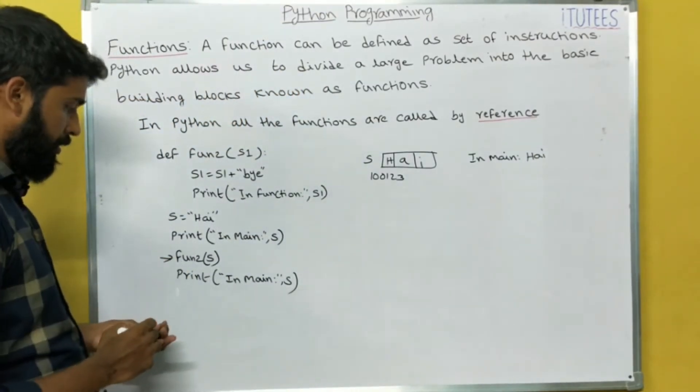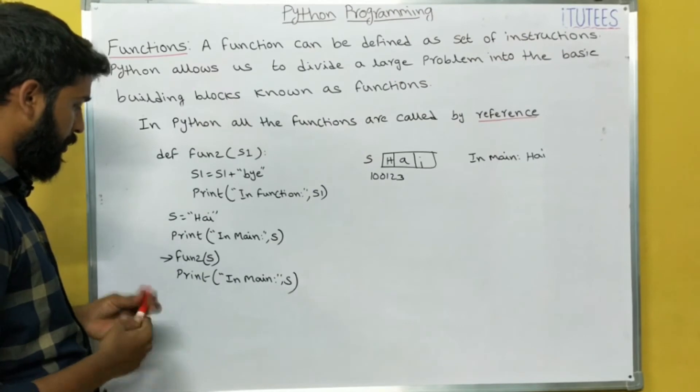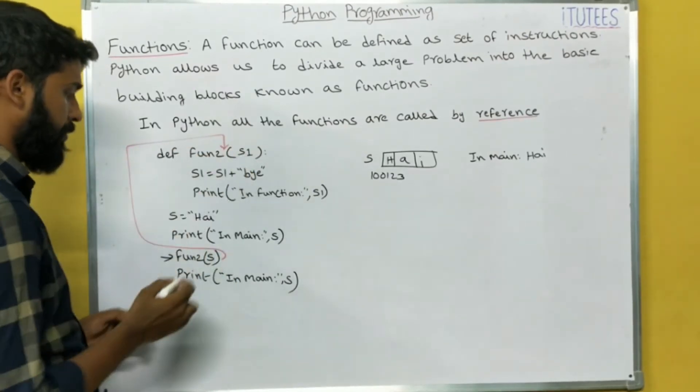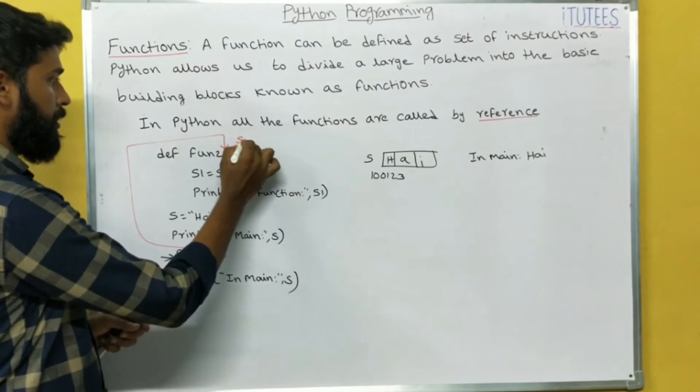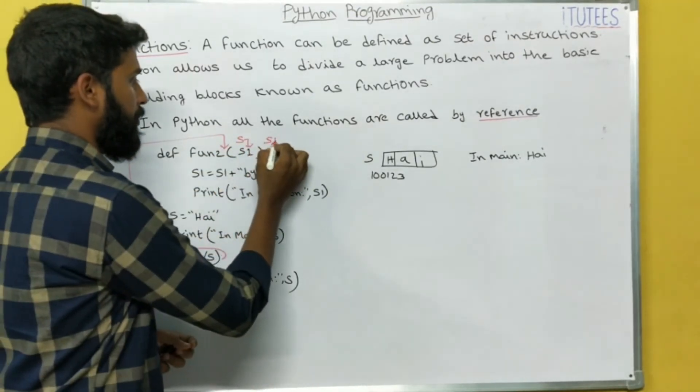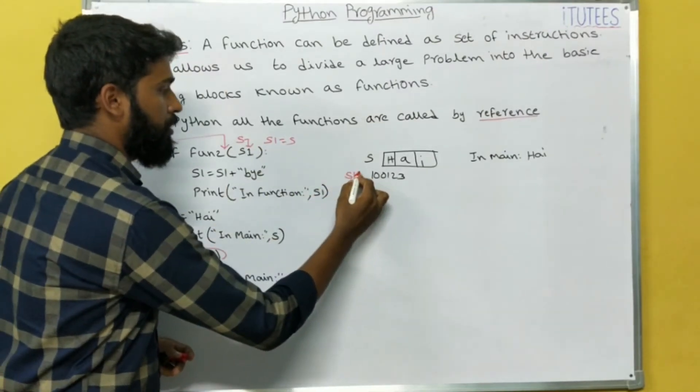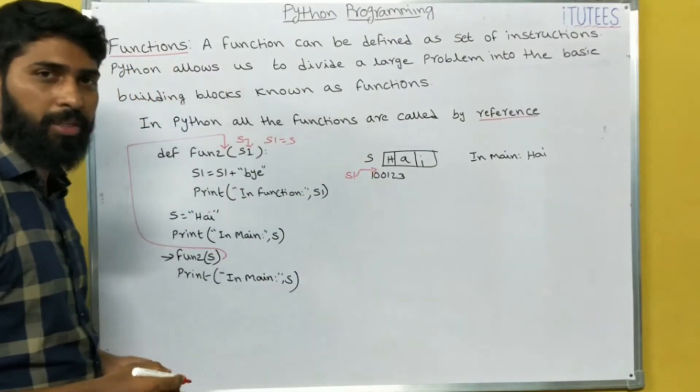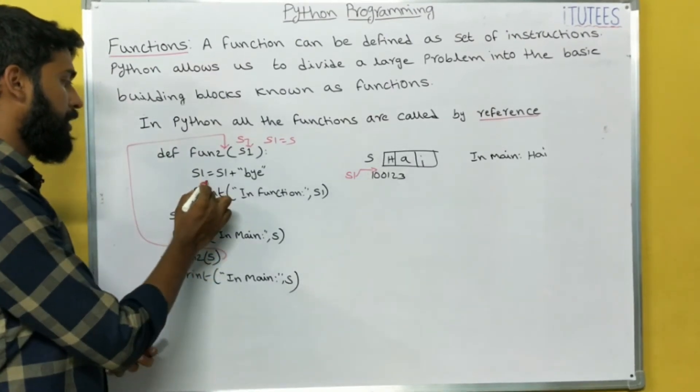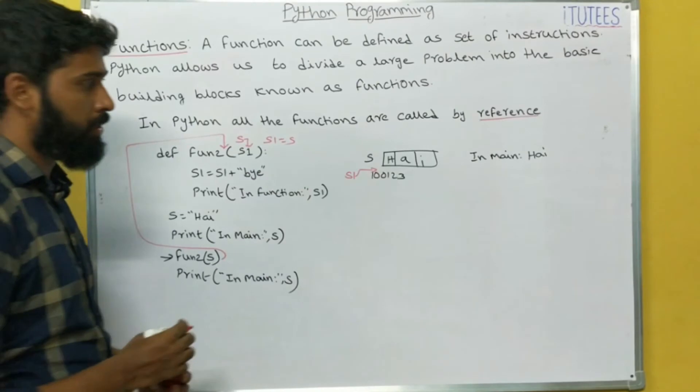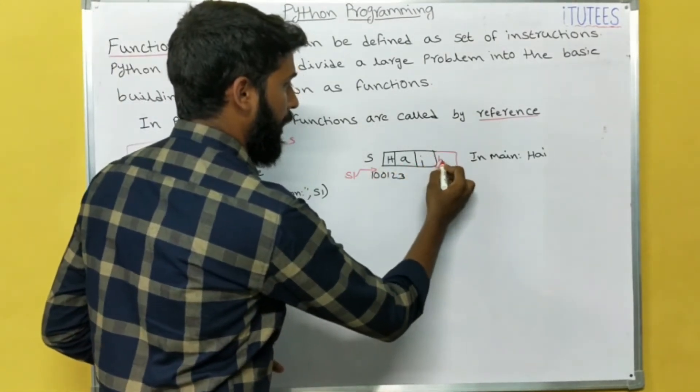So function2, that means the control goes to here. S is stored in S1. That means S1 equals to S, that means the same S1 is also referencing the same. S1, after that S1 equals to S1 by, that means here we are going to add by. No. So why? The strings are immutable. We cannot alter once you can assign.